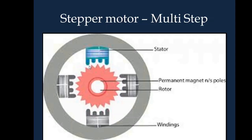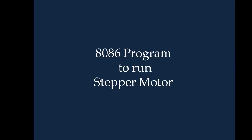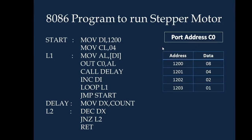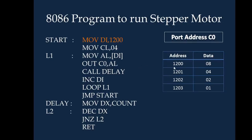Now instead of having four or eight positions, the stepper motor will have multiple positions for a single rotation. This will be the similar kind of construction for a stepper motor. Now we will see the 8086 program to control a stepper motor. For this stepper motor we will need a port address interface. That is C0 and the data values are 8, 4, 2, 1 to energize each coil. The actual values could differ depending upon the interface arrangement for the stepper motor with the 8086.